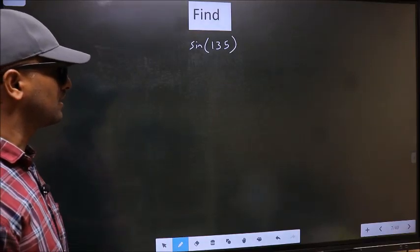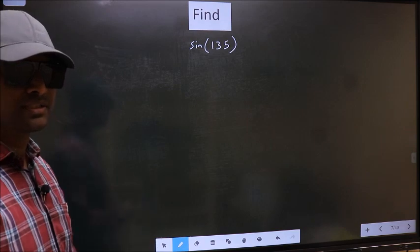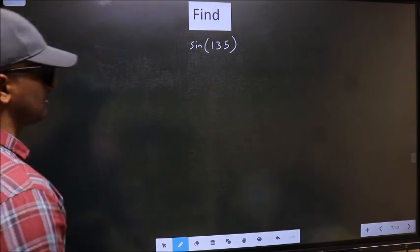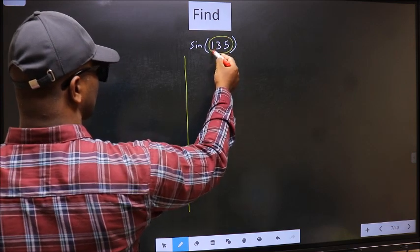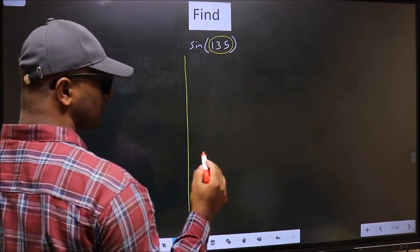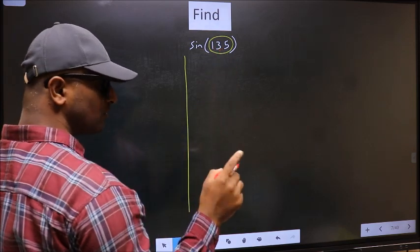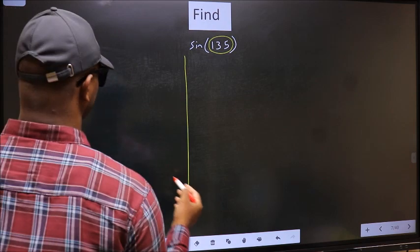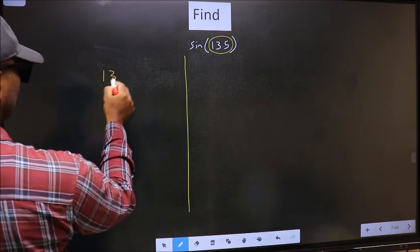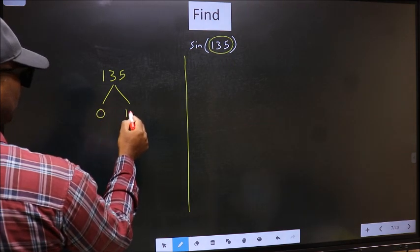Find sine 135. To find this, we should follow this method. See, here we have 135. Now you should check 135 lies between which two multiples of 180. What I mean is 135 lies between 0 and 180.